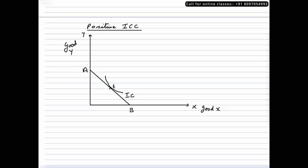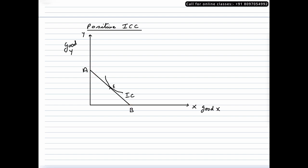The first thing we will look at is the positive ICC curve. On the Y axis we have good Y, on the X axis we have good X. AB is the budget line. IC is the initial indifference curve with equilibrium at E, which is the initial equilibrium. Now when the income of a consumer increases, his budget line would shift outwards to the right.